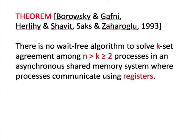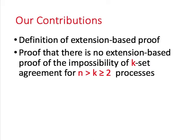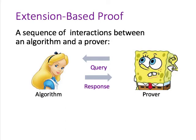A natural question is whether there are simpler proofs of this result. We formalized this question by defining the class of extension-based proofs, which contain valency arguments. Then we proved that there is no extension-based proof of the impossibility of k-set agreement when k is at least 2 and n is greater than k.